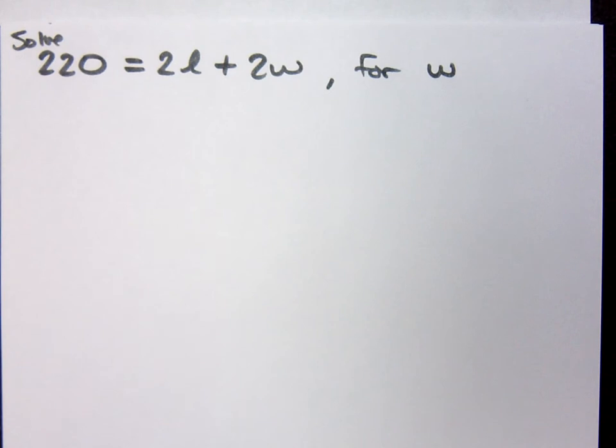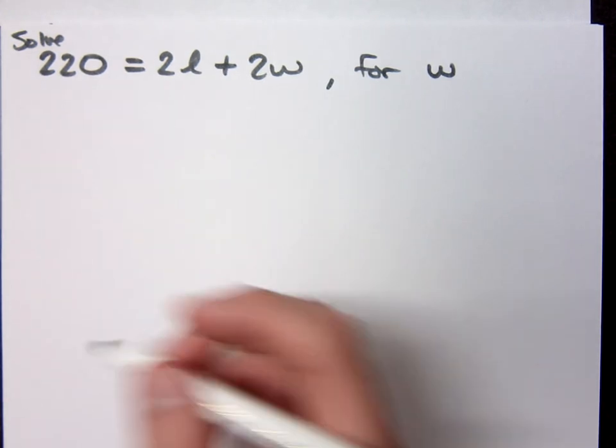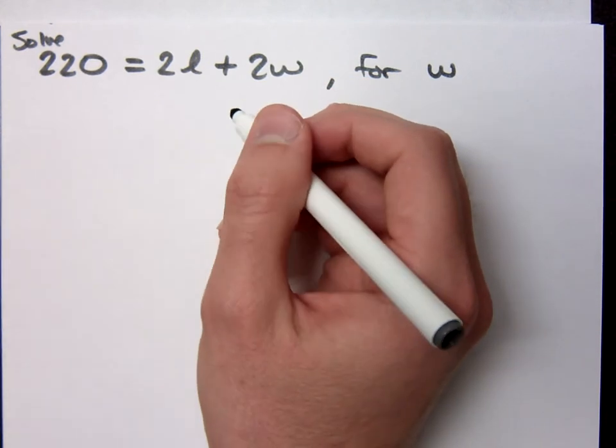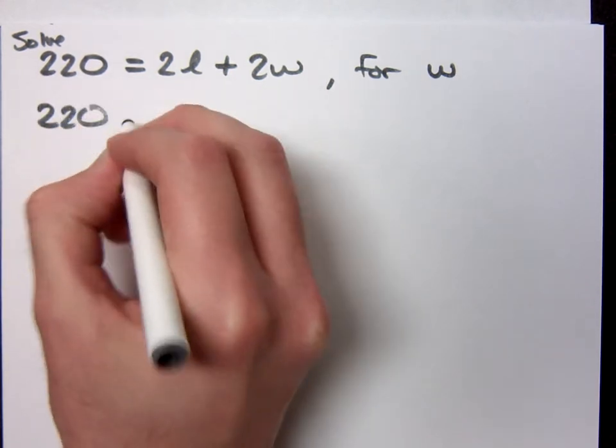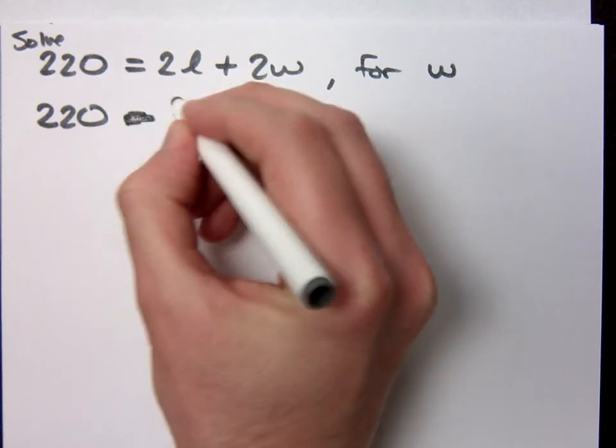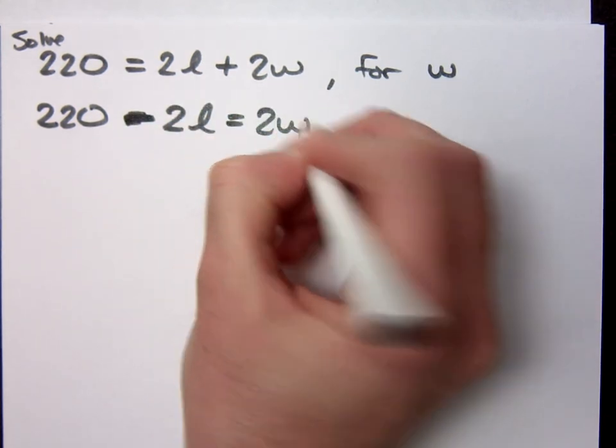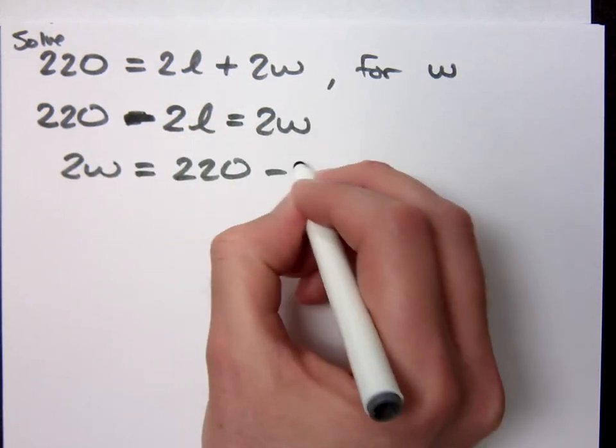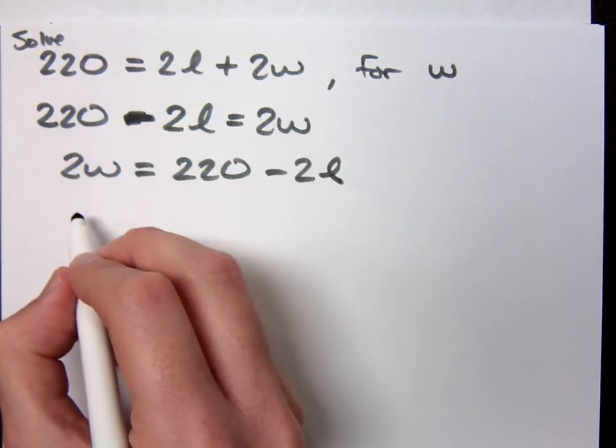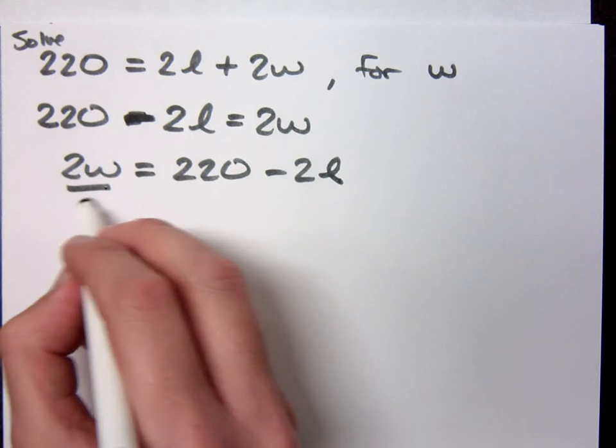Check this out. Solve it for W. That way, every time he comes out with a different length, you say no problem man, I'm just going to plug it into my little formula. If I solve this for W, how do you get W by itself? You move the 2L. Move the 2L, right? So that means 220 minus 2L equals 2W. Do you agree? Now I'm going to rearrange this because I've got the W on kind of a backwards side here. And then you would do what to get W by itself? Divide both sides by 2.